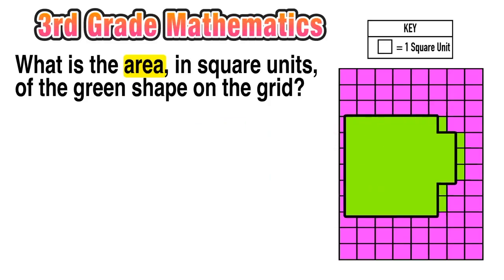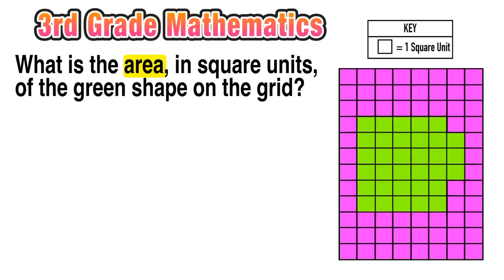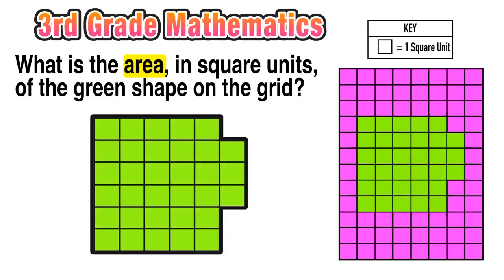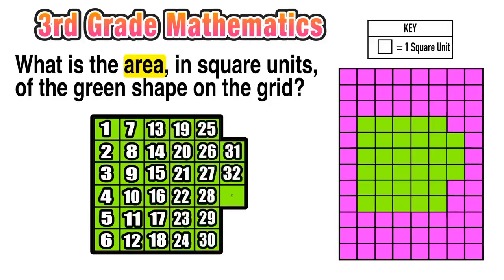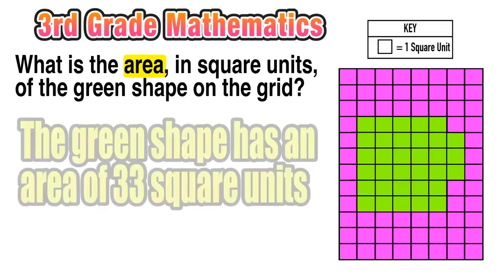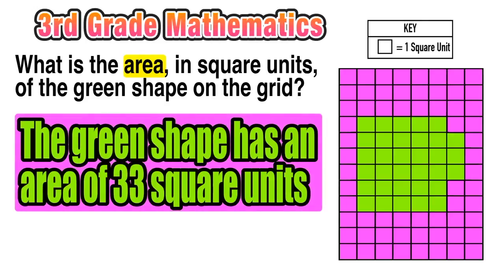If we do that, we can think about this figure in terms of area by counting how many of those square units it takes to fill up the interior. Now if we count we can see that we have rows of 6, 12, 18, 24, 30 plus those three extra ones on the side, so our total number of square units for that green figure is 33.